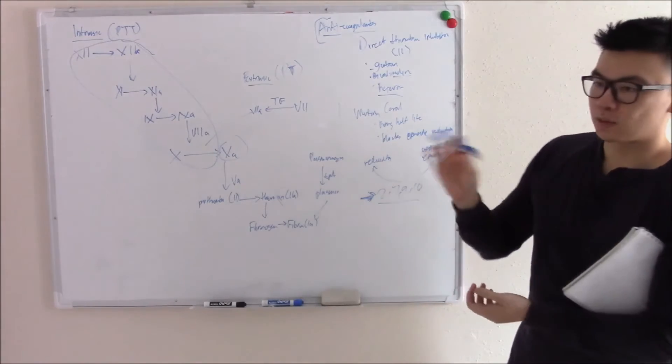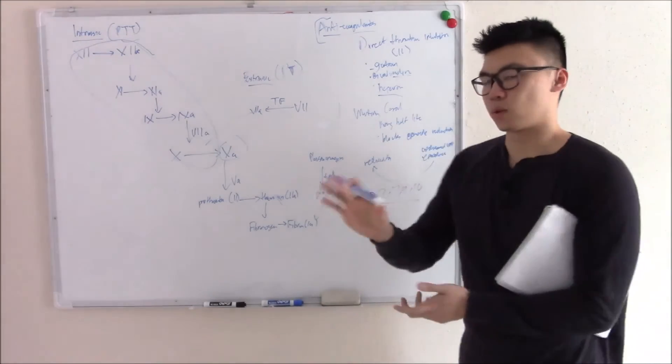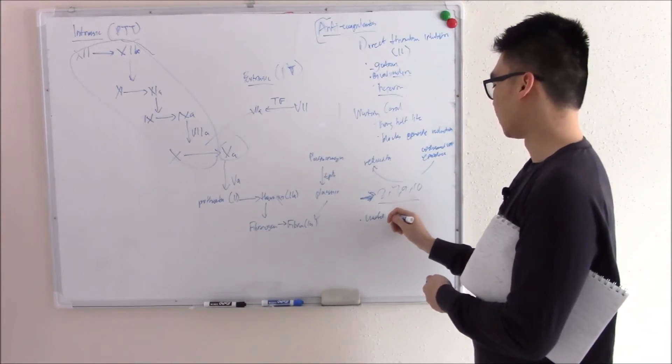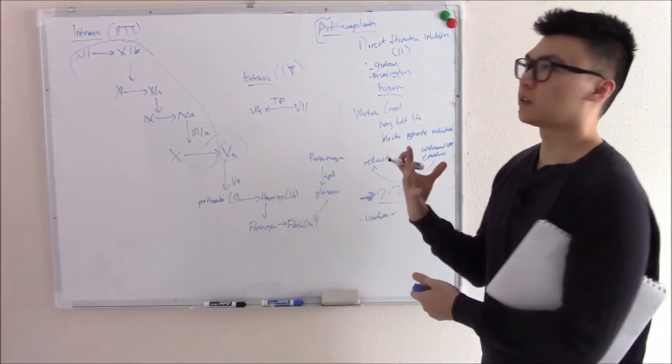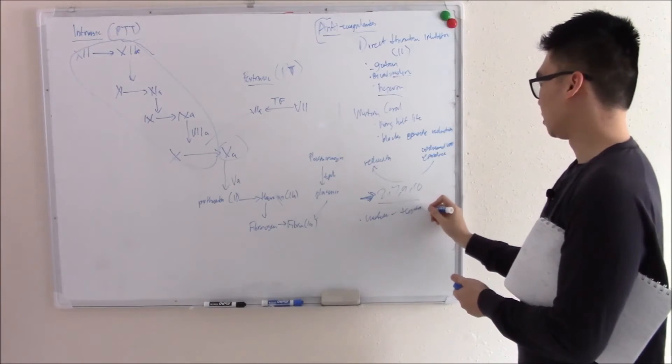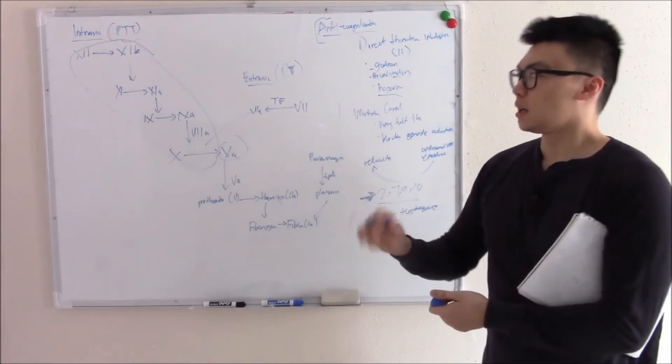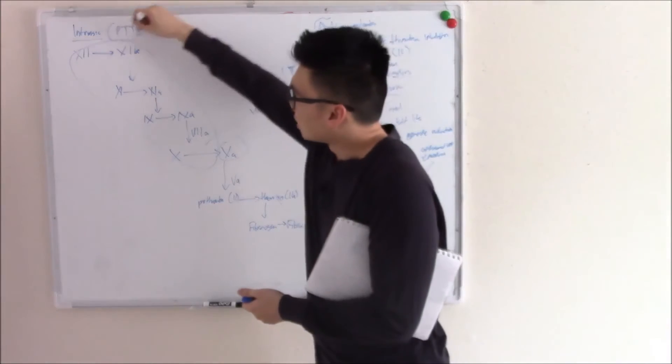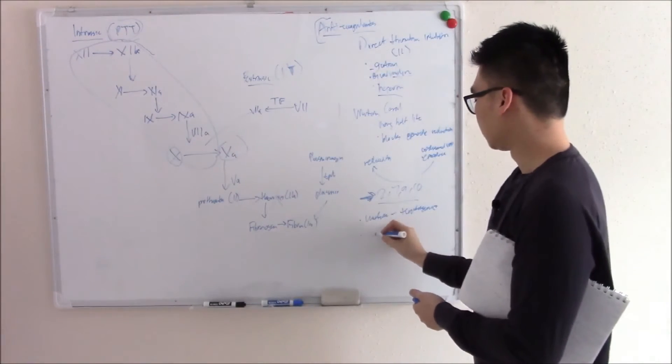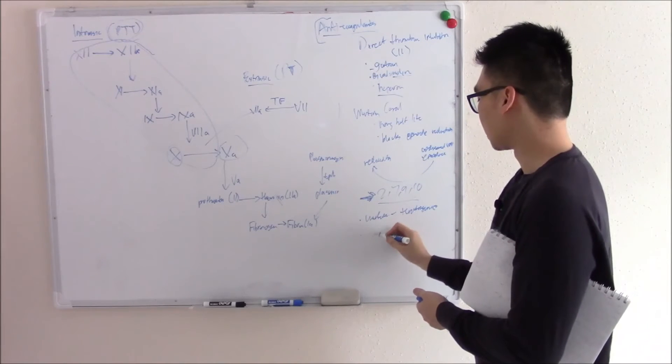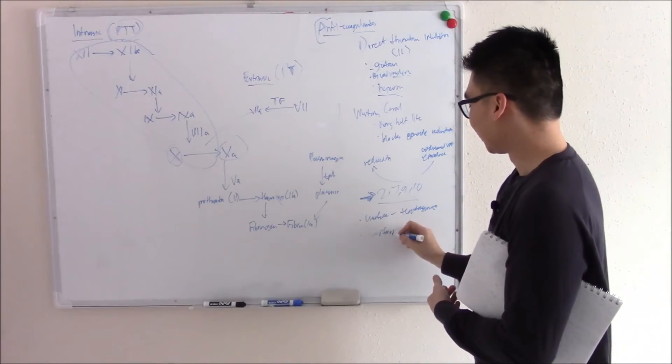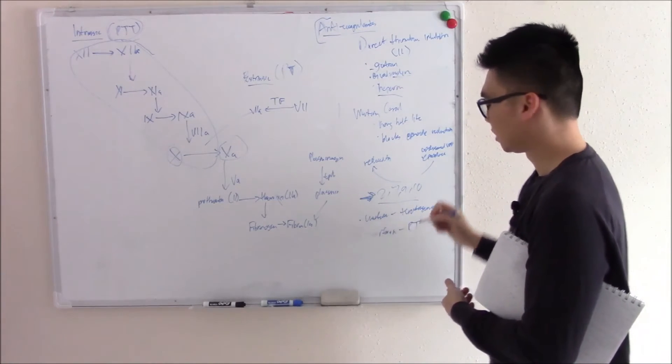But back to warfarin. Again warfarin is like the opposite of heparin where heparin didn't cross the placenta. Warfarin does. So you definitely don't want to give it to a pregnant woman. Warfarin not only crosses the placenta but it's teratogenic. And whereas heparin you monitor it with PTT because it affected factor 10, warfarin you monitor it with something else. What do you think we monitor it with? Well we only have two choices so it makes it pretty easy. We monitor it with PT.